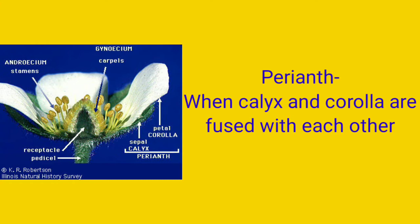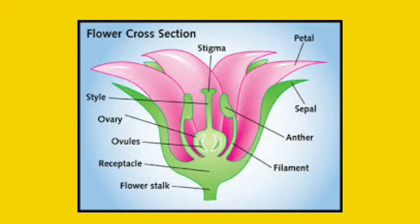The third terminology is accessory organs. The accessory organs are the non-essential organs of the flower, which are the calyx and the corolla. The essential organs are the androecium and gynoecium. Next comes the bisexual flower: when a flower consists of both androecium and gynoecium — that means both the male and female reproductive organs — it is called a bisexual flower. Examples are china rose, mango, and brinjal.